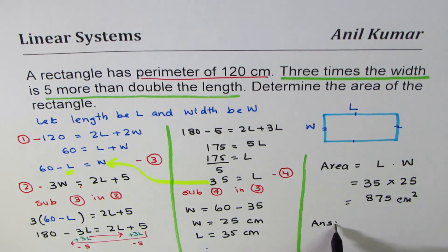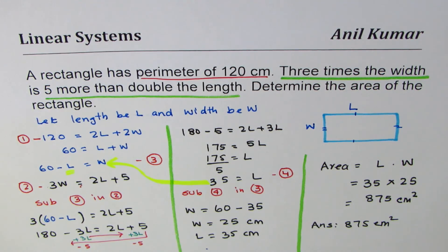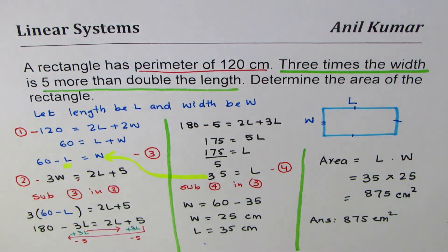So the answer is 875 square centimeters. I hope the steps are clear. The idea is when you read a question like this, sketch a diagram if possible, define variables, make equations based on the statements, and then use substitution or elimination method to calculate the variables and find the final answer. I'm Anil Kumar and I hope that helps. You can like the videos, share them with your friends, and post questions. Thank you and all the best.